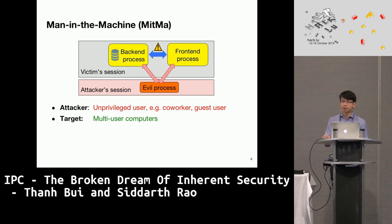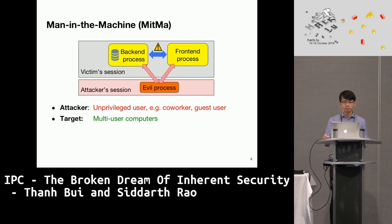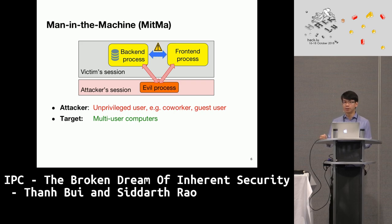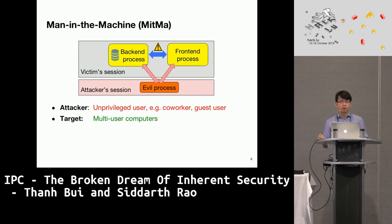This is the Man-in-the-Machine threat model. We consider the threat from malicious processes inside the computer. We are not interested in malware, because if the computer is infected with malware everything will be compromised. Instead, we are interested in legitimate processes run by other users — processes that are supposed to be on the computer. In our threat model, the attacker can be any unprivileged user trying to steal sensitive information from other users on the same computer. Examples of potential Man-in-the-Machine attackers are colleagues or family members.